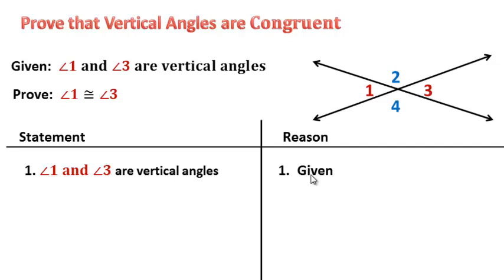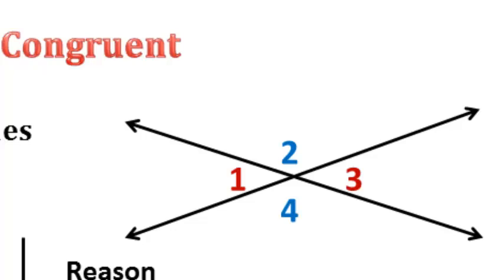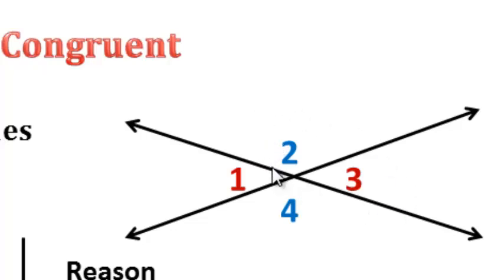Now let's go back to our diagram and see what we know. We've already been talking about that if we have a linear pair, they're supplementary. Let's go the other direction as well — we have another linear pair there too. We know that a linear pair is also supplementary, and we're going to use that to actually prove that angle one is congruent to angle three.